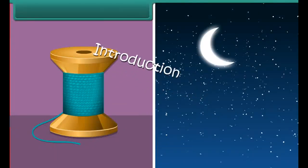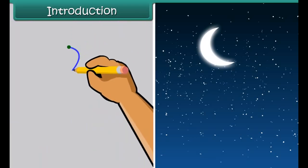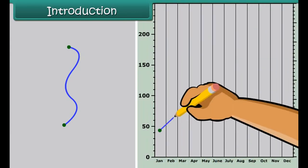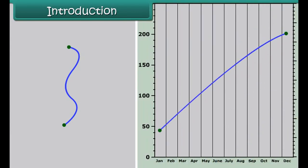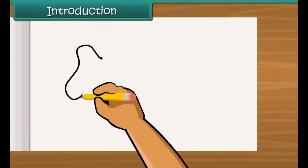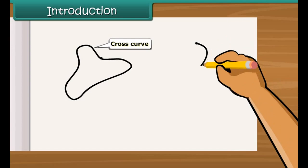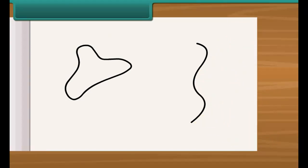Introduction: What shape does a loose thread make? What shape is a crescent moon? A curve in everyday usage means not straight. In mathematics, a curve can be straight also. A curve can cross itself or may not cross itself. If a curve does not cross itself, then it is called a simple curve.